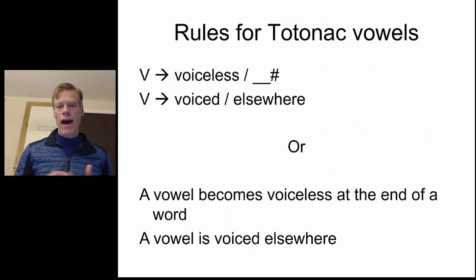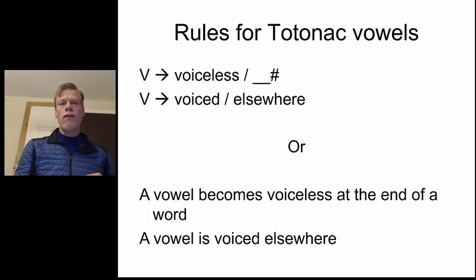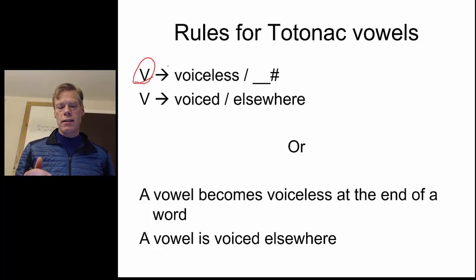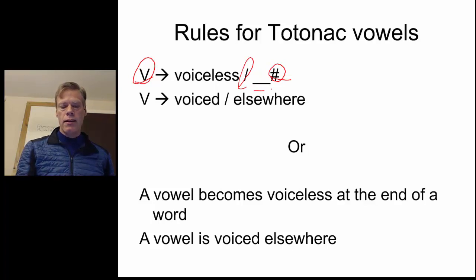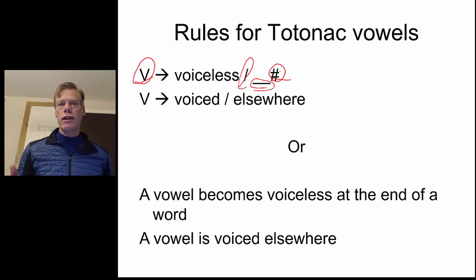So the rules for Teutonic vowels are that we start with a vowel, and vowels are by default voiced. So we're always going to assume that they begin voiced and they become voiceless. A vowel — we'll use just capital V to mean any vowel — becomes voiceless at the end of a word. So this slash means 'in the environment of,' this is our target, and this is our environment, which is the end of a word. And then it remains voiced elsewhere. That elsewhere condition is important — that's the default. So we still need to include that so that we know what to do with vowels that don't end words.